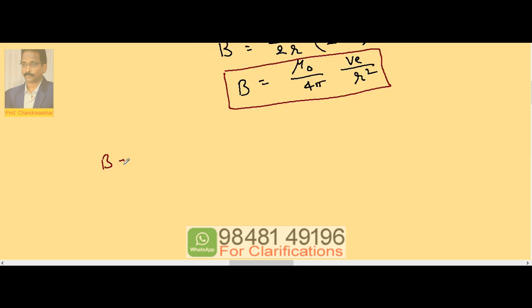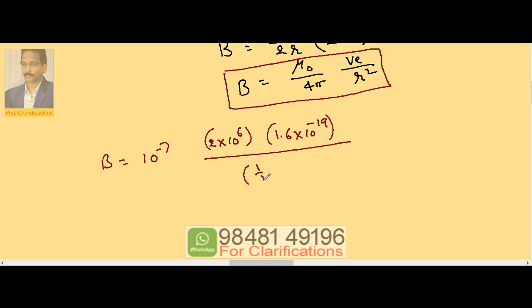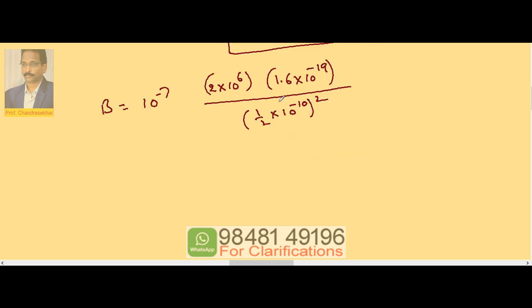B = 10⁻⁷ × velocity 2×10⁶ × charge of electron 1.6×10⁻¹⁹, divided by r² where r = 0.5×10⁻¹⁰, so r² = (0.5×10⁻¹⁰)² = (1/2 × 10⁻¹⁰)². Simplifying: 1.6 × 2 = 3.2; (1/2)² gives a factor of 4 in the numerator; powers: 10⁻¹⁹ × 10⁻⁷ = 10⁻²⁶.